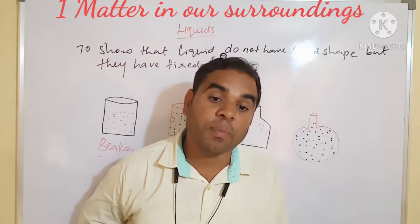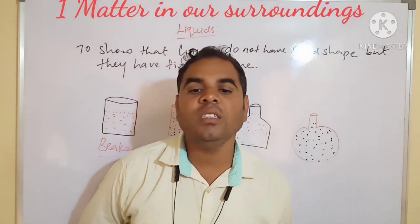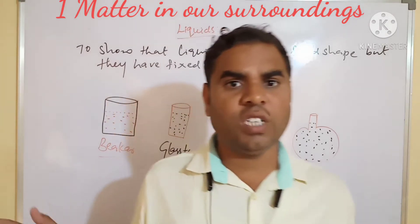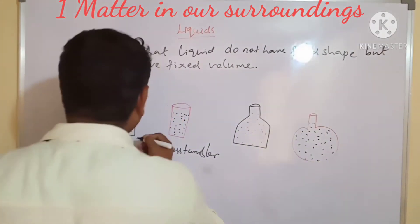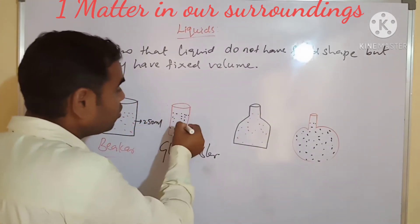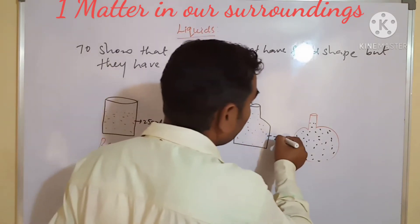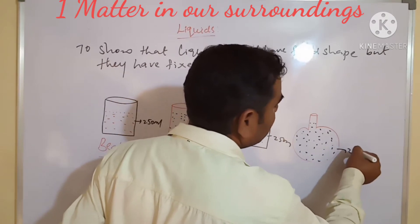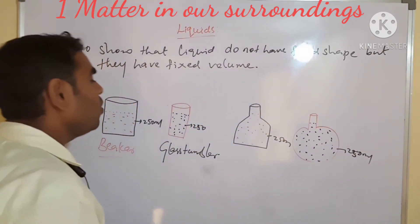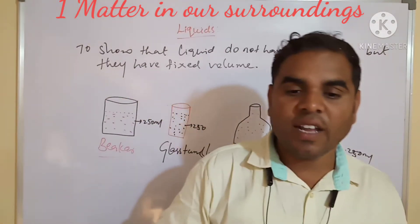A liquid has no fixed shape — it takes the shape of its container. And liquid has fixed volume. Volume is fixed; there is no change in the volume. Here we took 250 ml of water. Here also 250 ml is there, here also 250 ml. See, there is no change — only the shape of the container is changing.